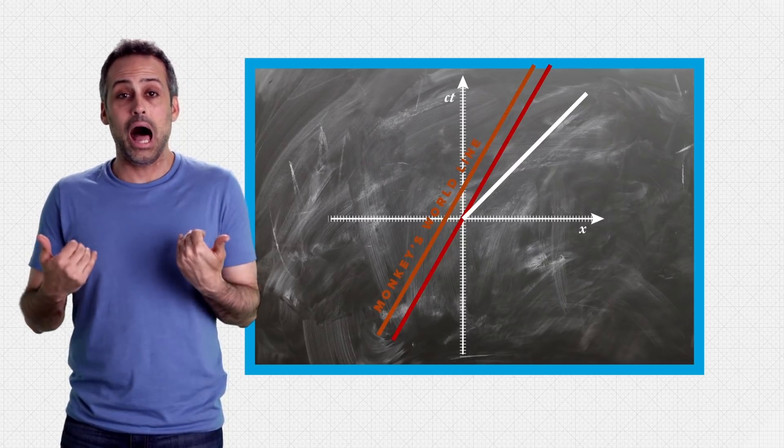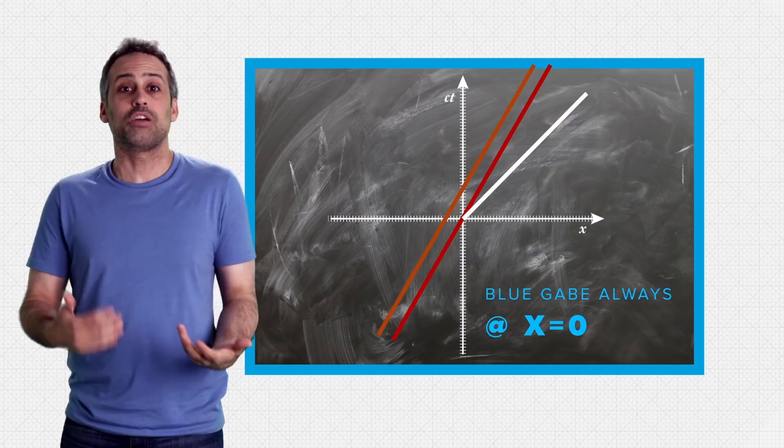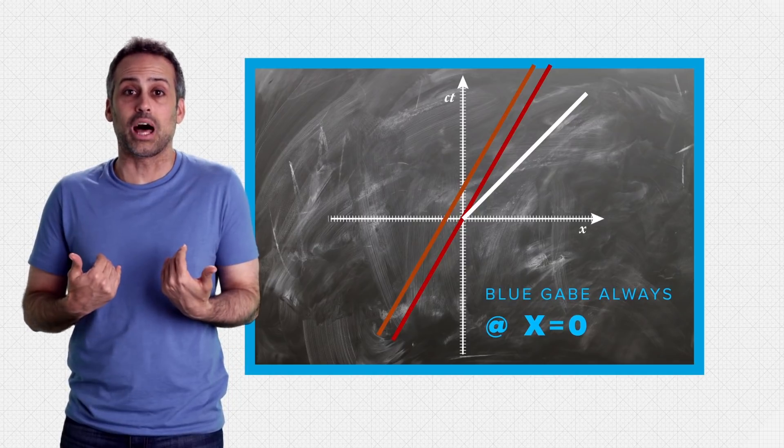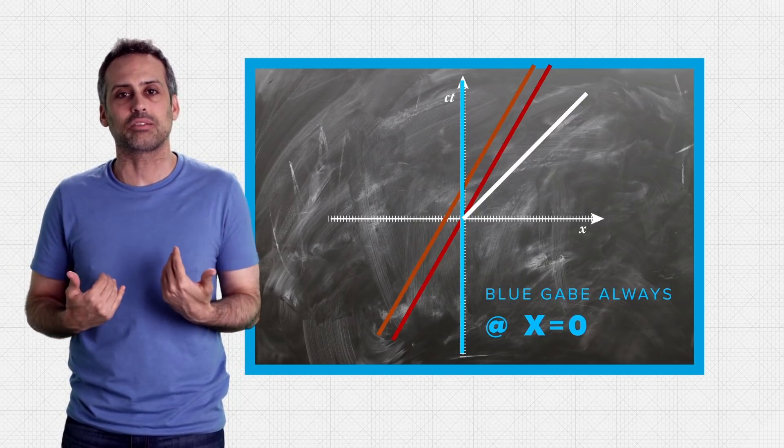What about me? I am at x equals 0 for every event at which I am present. So my world line is vertical. It coincides with my time axis.